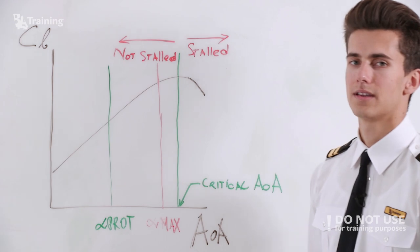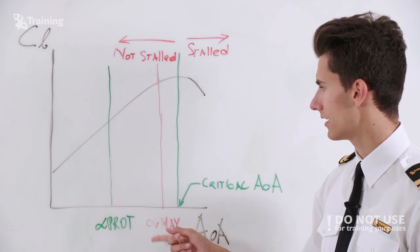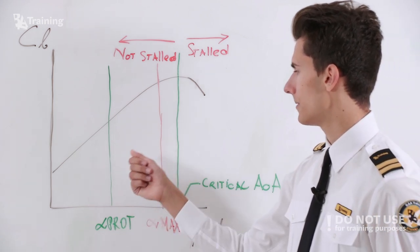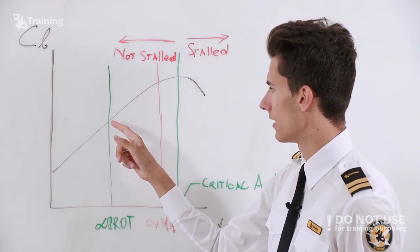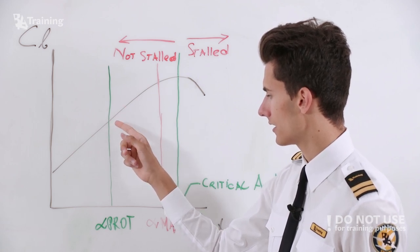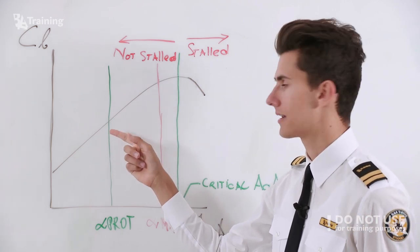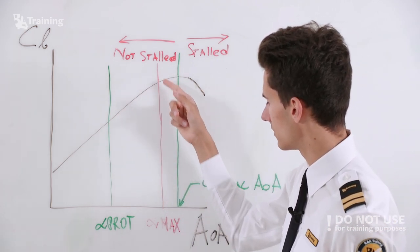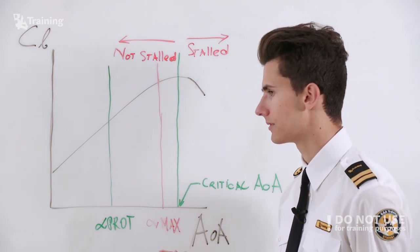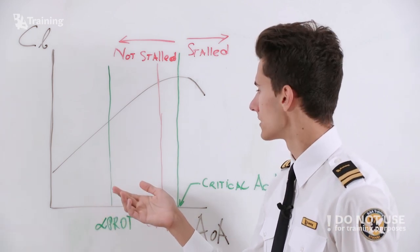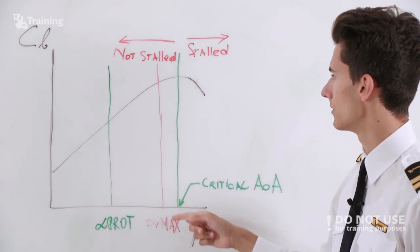Speaking about the Airbus specifically, in normal law we have two key protections: alpha protection and alpha max. If the pilot increases the angle of attack up to alpha prot and releases the stick, the aircraft will try to maintain that angle of attack and not exceed it. The pilot can always override it by pulling back on the stick all the way to alpha max, which is the limit in normal law — and as long as the pilot is pulling up, that angle will never be exceeded.